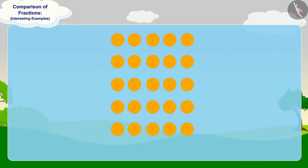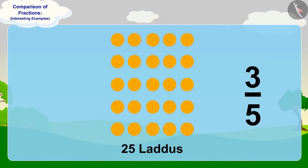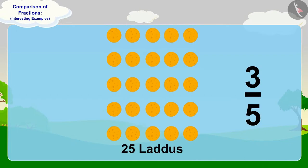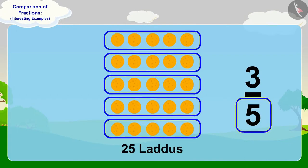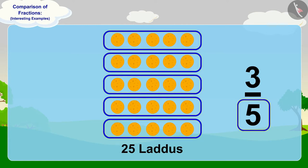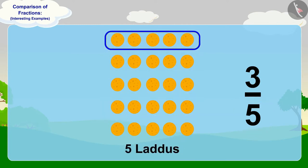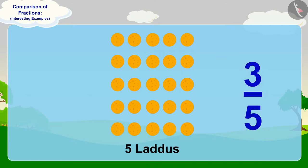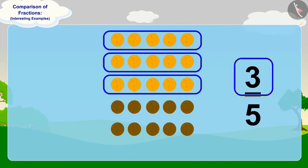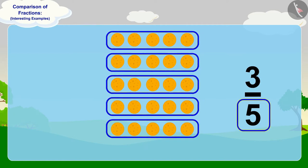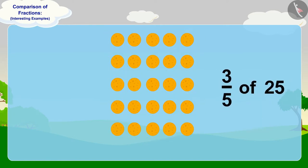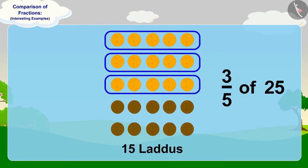Well done kids, your answer is absolutely correct. To find three-fifth of 25 laddus, we will first divide the 25 laddus into five equal parts. In this way, there will be five laddus in each part. Now, to find three-fifth, we will take three parts out of these five parts. In this way, three-fifth of 25 laddus are 15 laddus.